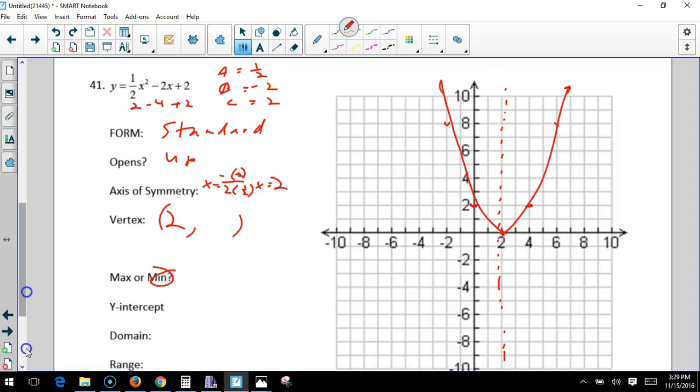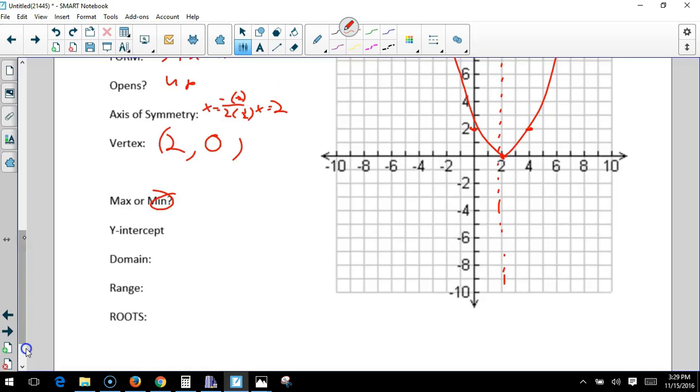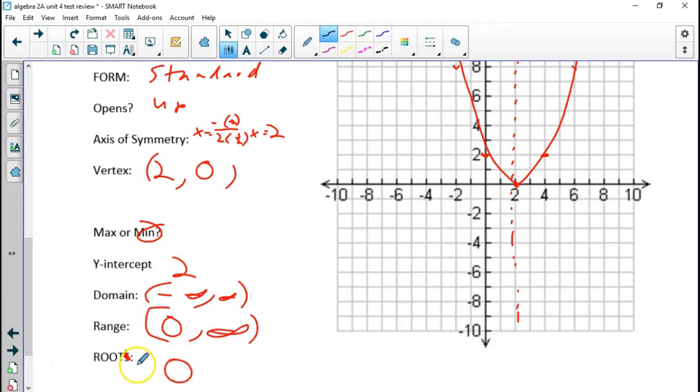It's got a minimum. Oh sorry, 2 to 0. I'm going to write that down. The y-intercept is at 0, 2. The domain, again, not changing. Negative infinity to positive infinity. The range, how low does it go? 0, inclusive. How high? Positive infinity. The root, I'm going to cross off the S because there's only one root, is right here at 2 comma 0.